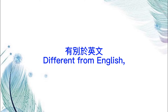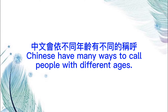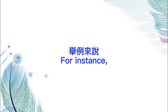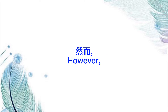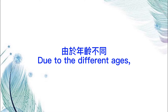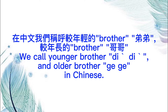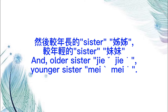Different from English, Chinese has many ways to call people of different ages. For instance, in English we only say brother and sister. However, due to different ages, we call younger brother 弟弟 and older brother 哥哥 in Chinese, older sister 姐姐, and younger sister 妹妹.